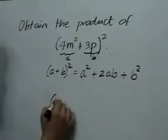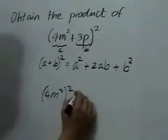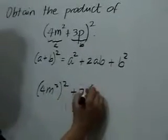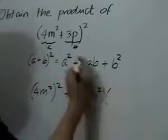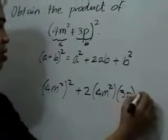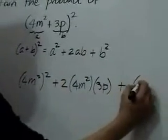is just the square of the first term, so the square of 4m squared, plus twice the product of the first term, 4m squared, and the second term, 3p, plus the square of the second term, 3p.